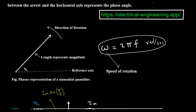The length of this arrow is important. As the label says, the length represents magnitude. In the context of AC circuits, this magnitude is the peak or maximum value of the quantity we're looking at. For example, if we're talking about a voltage that swings between plus 10 volts and minus 10 volts, the magnitude, or length of our phasor arrow, would represent 10 volts. Next, look at the dotted horizontal line labeled reference axis. This is our starting line, our zero degree point. The angle that our phasor arrow makes with this reference axis is called the phase angle. This angle tells us where the alternating quantity is in its cycle at a specific moment in time, usually at time equals zero.